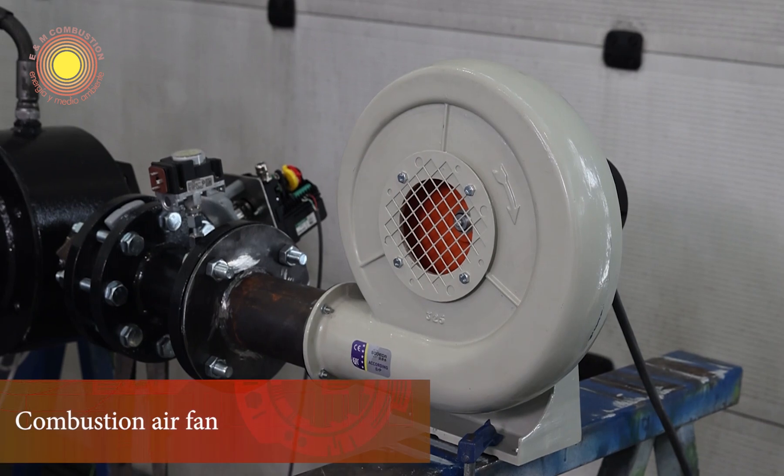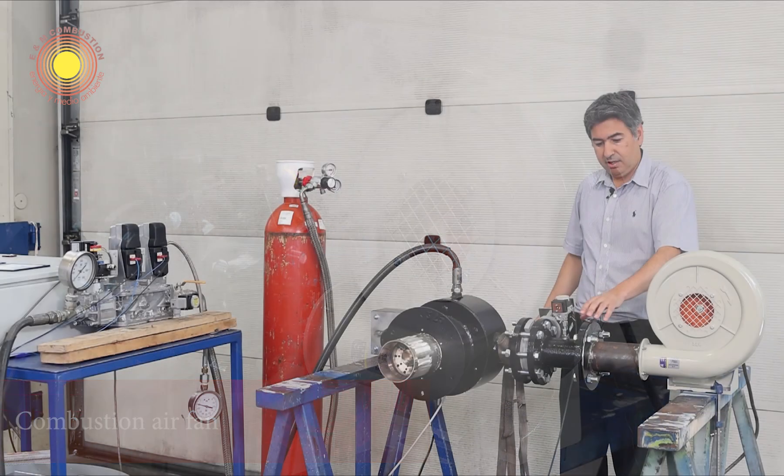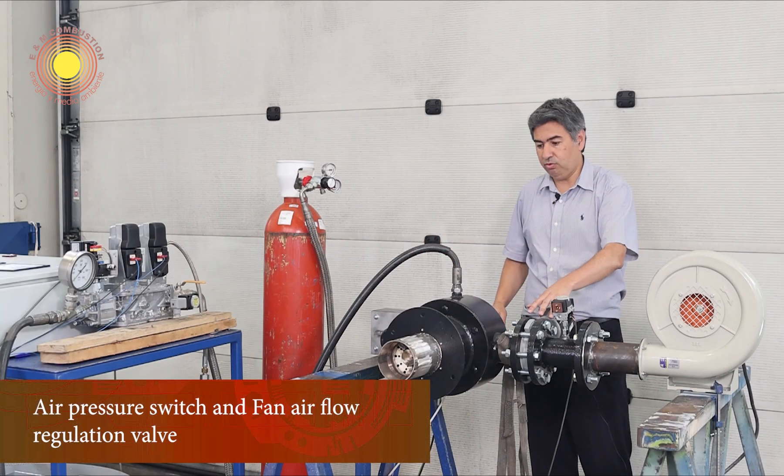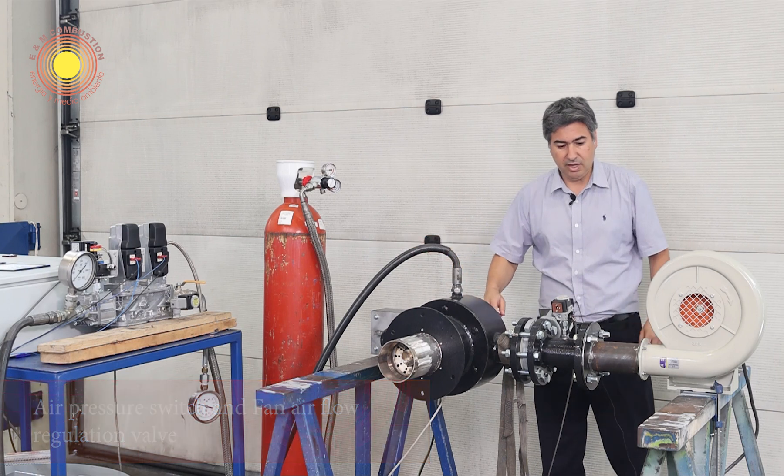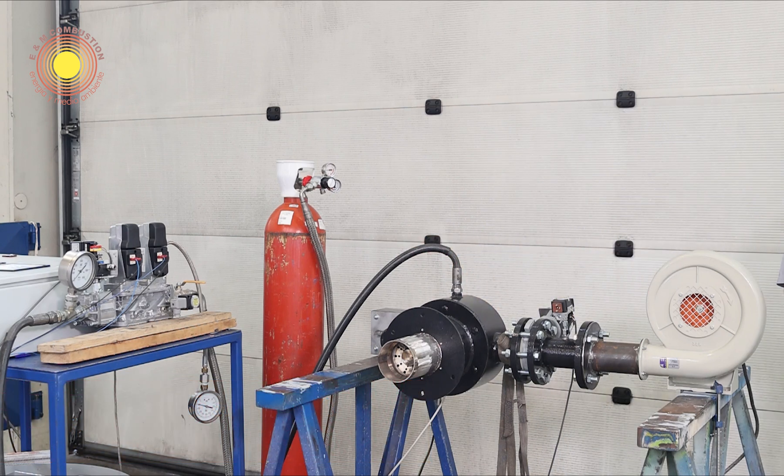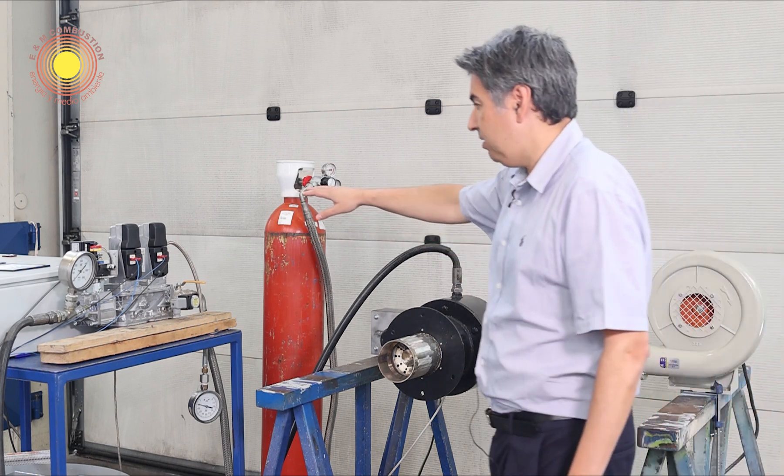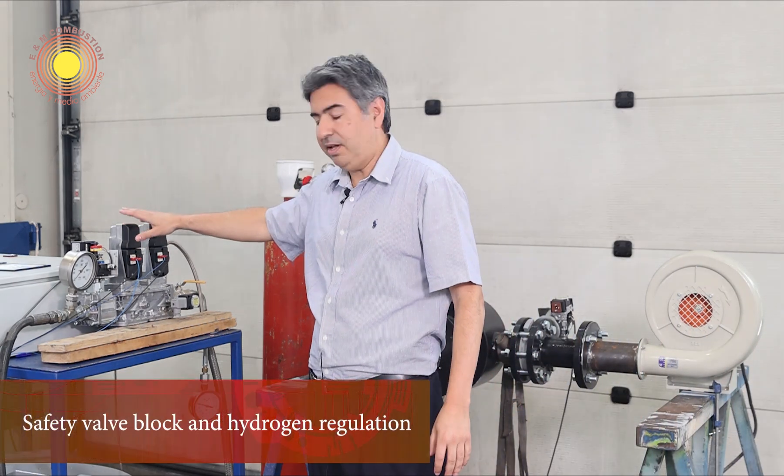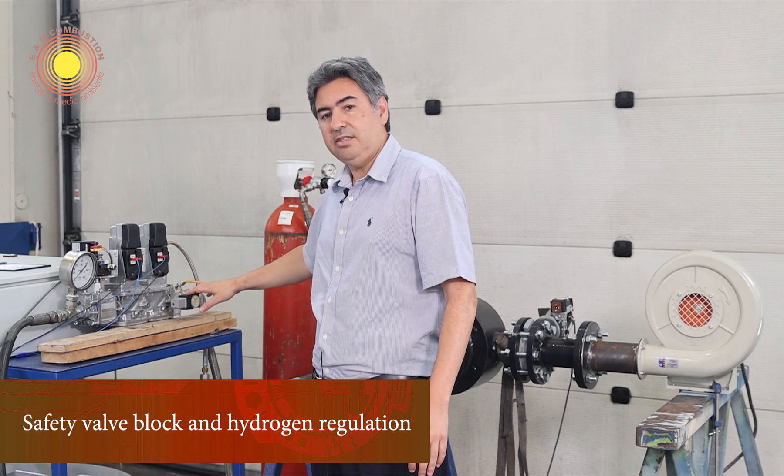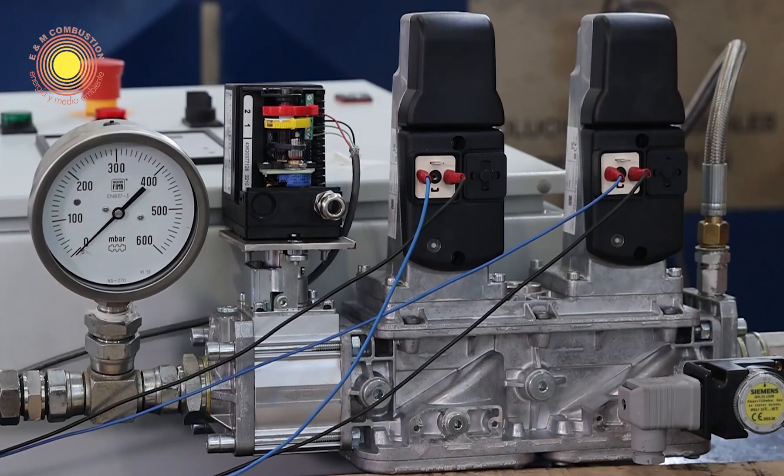We have here the fan to produce the air. We have here a pressure switch and the airflow control valve. So we are going to mix it together and on the other side we have here the safety gas valves and the safety hydrogen pressure switch.